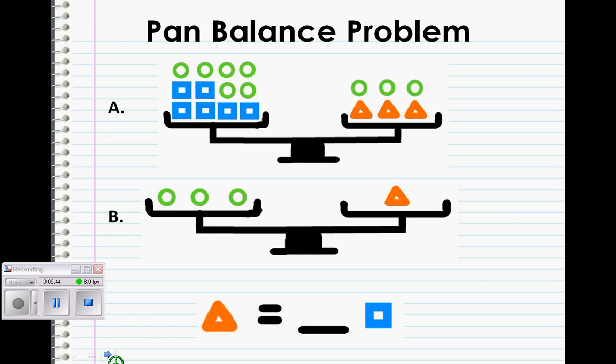So we should first find out what we can cross out. As we can see in pan A, there are enough circles to be crossed off in both sides. Three off each. Now we are left with six squares, three circles, and three triangles.